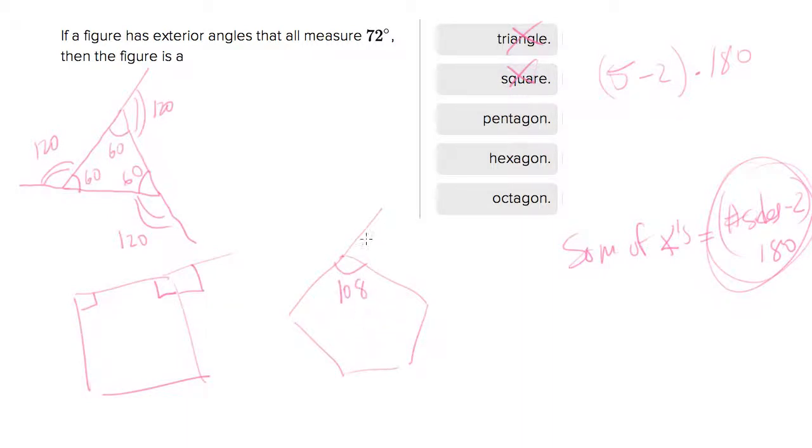Now the exterior angle, therefore, will be 180 minus 108, which is 72. And bingo, that is your shape, the pentagon.